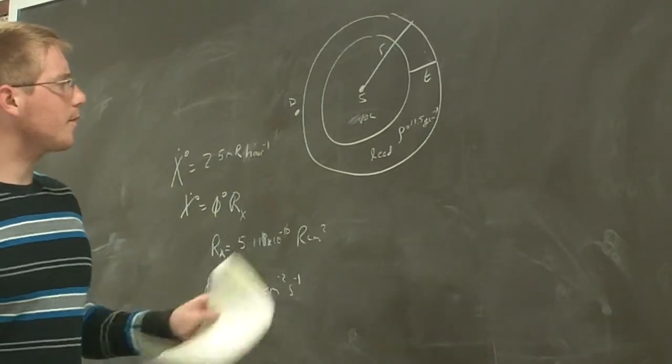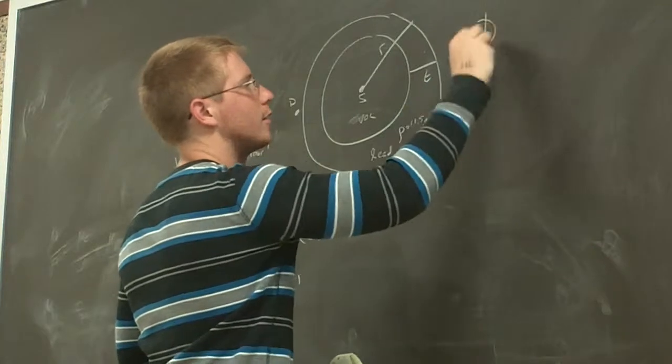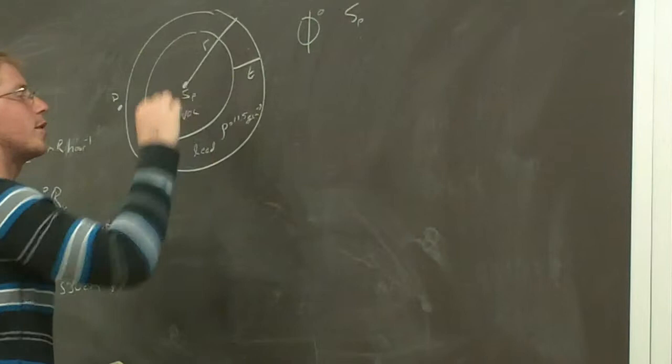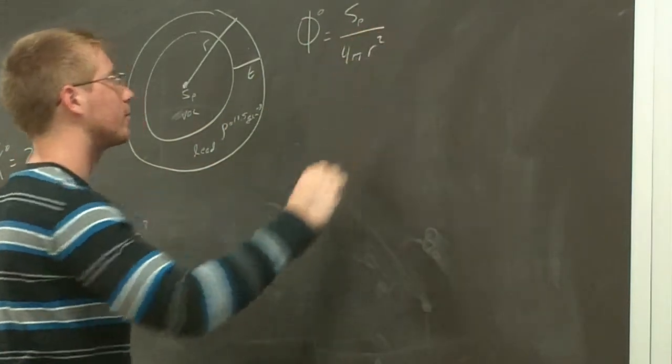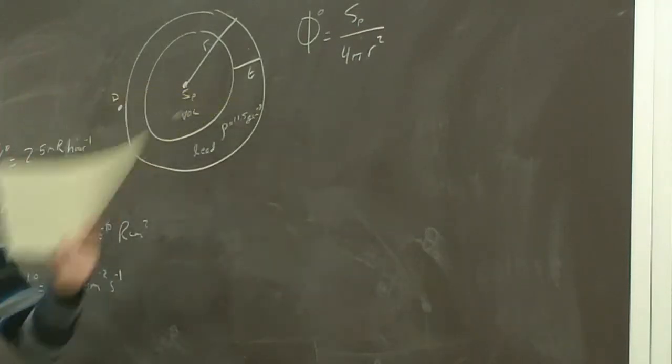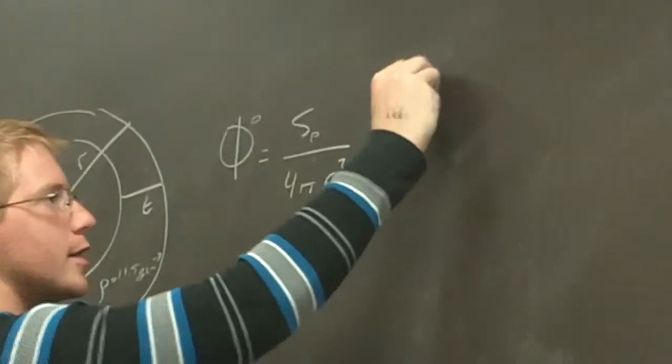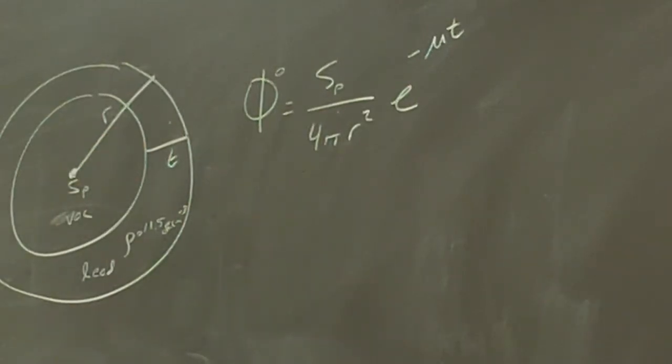So we're going to get some geometric attenuation here. So we're going to have our source. This is a point source, Sp. We're going to have some geometric attenuation, 4 pi r squared. Okay? It doesn't matter how thick this is, you're still going to get the same amount of geometric attenuation. Then you're going to have some exponential attenuation, e to the minus mu t. Because you're going to have some thickness that has to travel through to get there. Everybody okay with that?